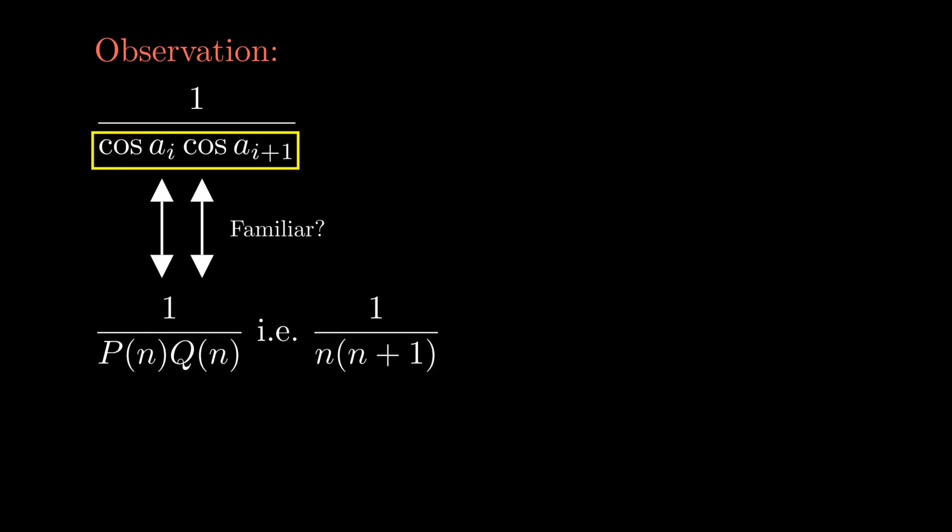Based on this observation, some of you may have guessed that we should try to split the sum into A over cosine aᵢ₊₁ minus B over cosine aᵢ, where A and B are objects that we are going to determine. This step is similar to what you would do for partial fraction decomposition.